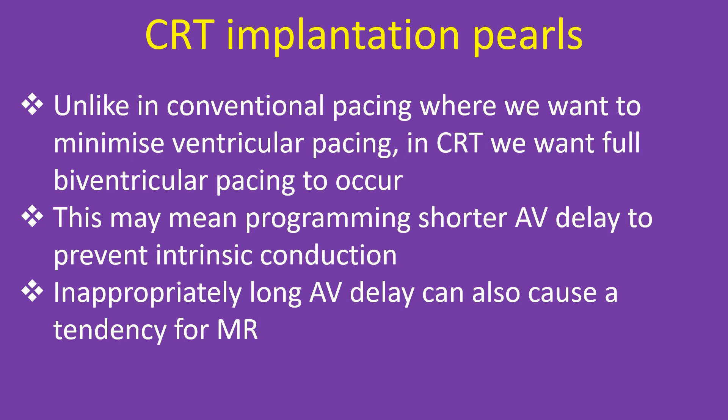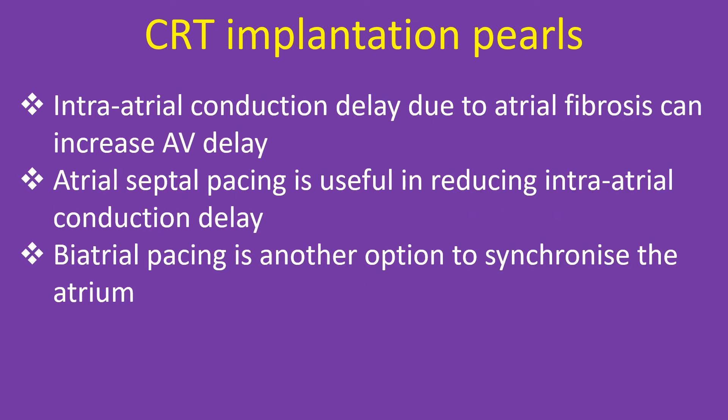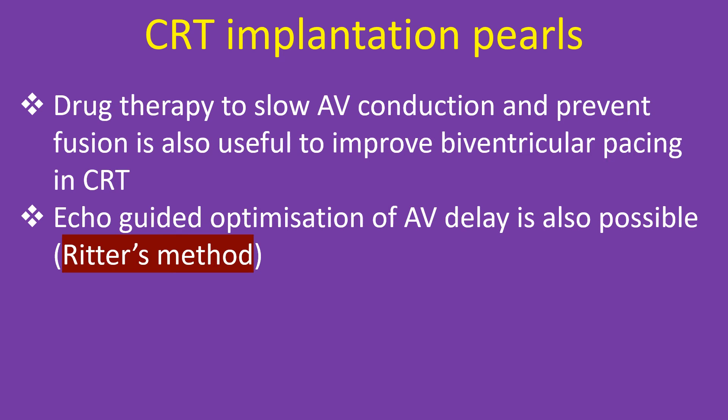Unlike in conventional pacing where we want to minimize ventricular pacing, in CRT we want full biventricular pacing to occur. This may mean programming a shorter AV delay to prevent intrinsic conduction. Inappropriately long AV delay can also cause a tendency for mitral regurgitation. Intra-atrial conduction delay due to atrial fibrosis can increase AV delay. Atrial septal pacing is useful in reducing intra-atrial conduction delay. Bi-atrial pacing is another option to synchronize the atrium. Drug therapy to slow AV conduction and prevent fusion stimulation is also useful to improve biventricular pacing in CRT. Echo-guided optimization of AV delay is also possible using Ritter's method.